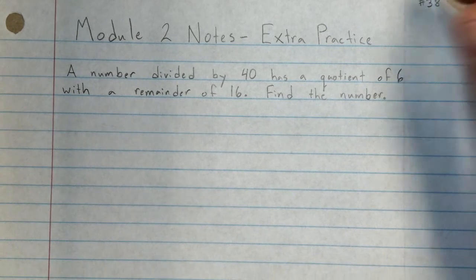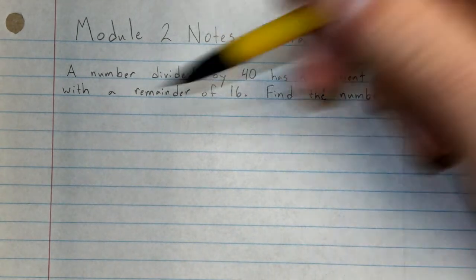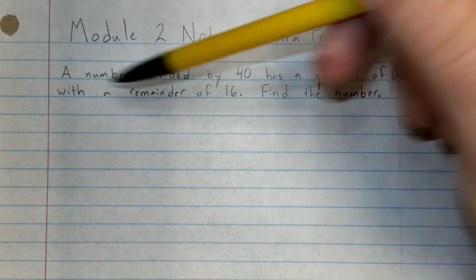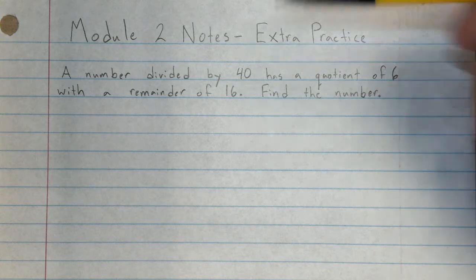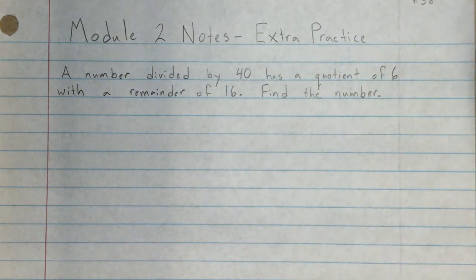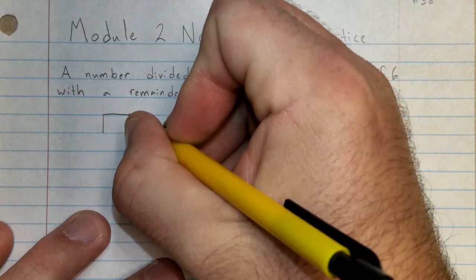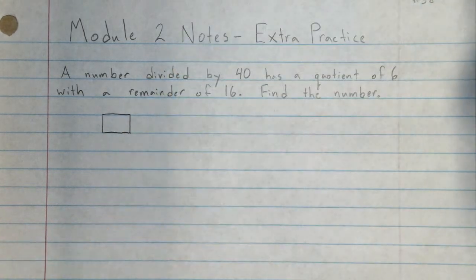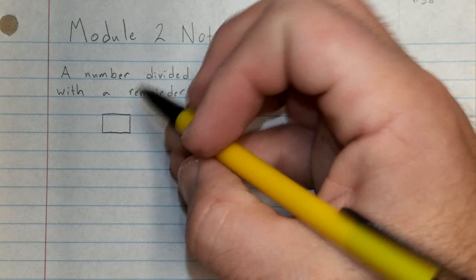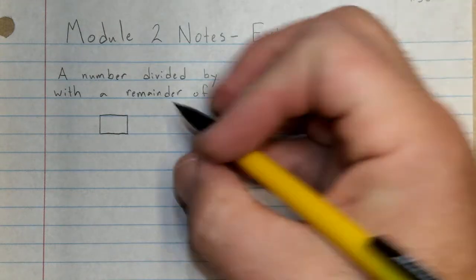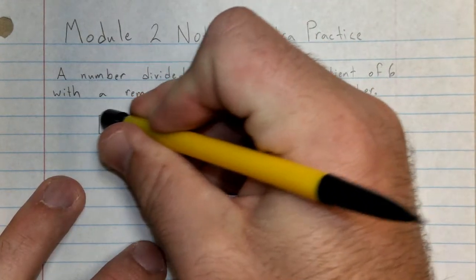If you're already comfortable using multiplication to check your division problems, this may seem pretty easy, but I want to make sure it makes sense for everybody. A number divided by 40 has a quotient of 6 with a remainder of 16. We're going to start by taking that and translating it into a number sentence. A number - I don't know what the number is, so I'm just going to use this empty box. Well, it's not really empty, it has a mystery number inside, but we'll figure out what that is in a minute. As you get older, we'll talk more about variables, but for now, we'll use the box.